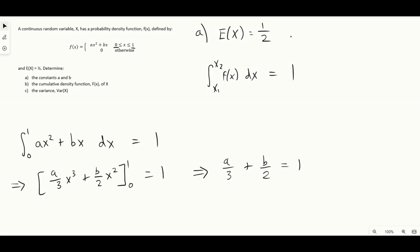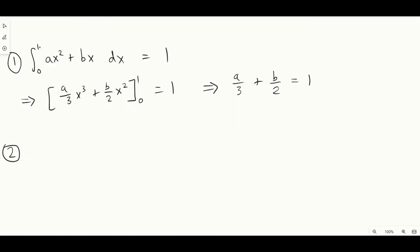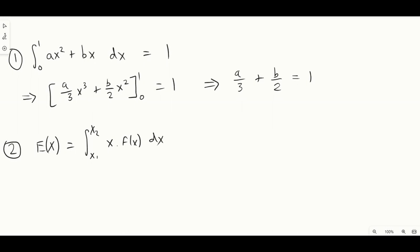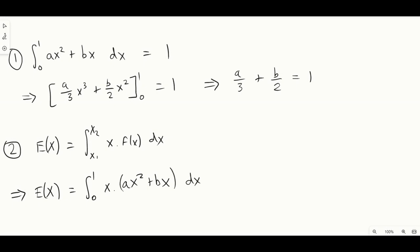To get the second equation we'll use that the expectation is 1/2. Generally, the expectation of x in the continuous case is defined by integrating x times the PDF over the range of x with respect to x. So in this case, the expectation of x is the integral between 0 and 1 of x times our PDF, which is ax² + bx, with respect to dx. We know this equals 1/2 as we're told that in the question.